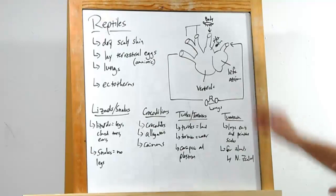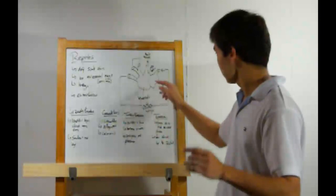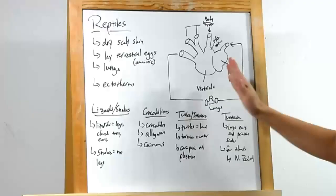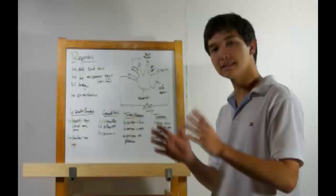It's still three-chambered. You have a right atrium, a left atrium, and a ventricle. But see right here, we're getting part of a divide. Why is this important?